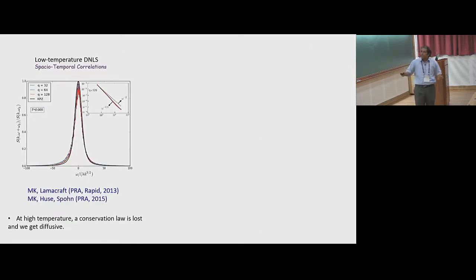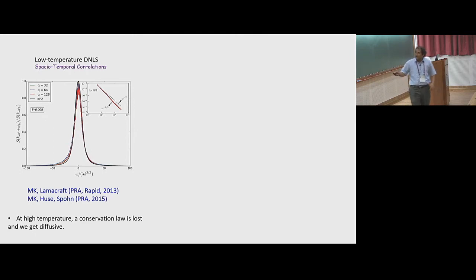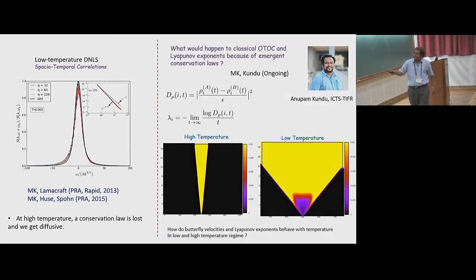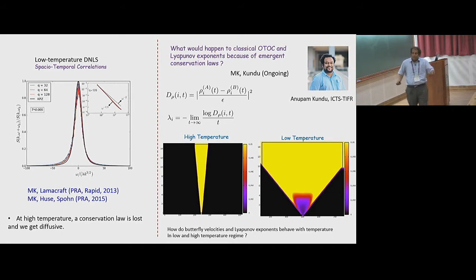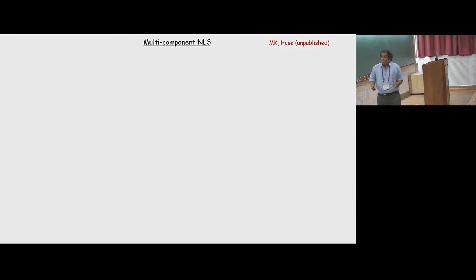This more or less explains why you get KPZ scaling, and more details can be understood from NFH. Because of this additional emergent conserved quantity at low temperatures, one can also calculate OTOCs, Lyapunov exponents, and ask how these emerging conserved quantities change them. But the main message was to show KPZ scaling in the discrete nonlinear Schrödinger equation, which is a non-integrable classical equation in one dimension.